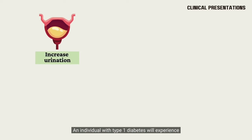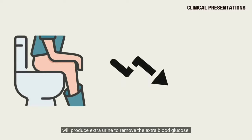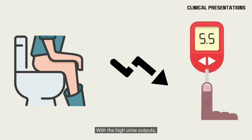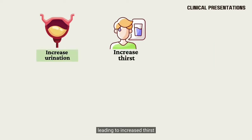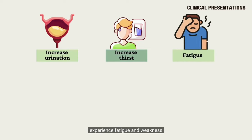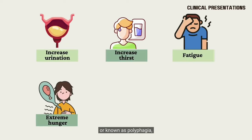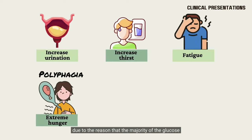An individual with type 1 diabetes will experience frequent urination, a condition known as polyuria. This is because the body will produce extra urine to remove the extra blood glucose. With the high urine output, the individual will lose a considerable amount of body fluid, leading to increased thirst, a condition known as polydipsia. Individuals with type 1 diabetes will also experience fatigue and weakness because blood glucose cannot be taken up by the cells to produce energy. Along with this is extreme hunger, known as polyphagia, because most of the glucose is removed from the body and none is absorbed by the cells.